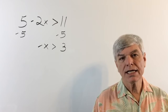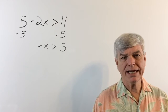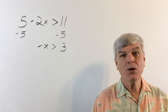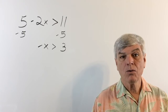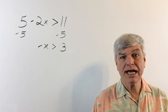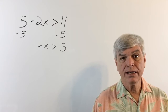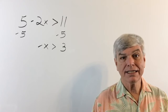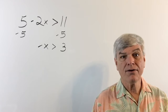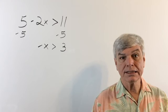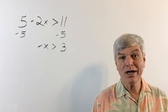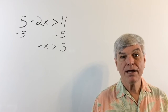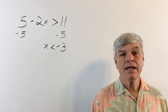We're going to multiply both sides by negative 1. When I multiply by negative 1, we get x and negative 3. But the inequality sign is going to flip — it's going to go in the other direction. That's the only thing different from solving a regular equation: when you multiply or divide by negative 1, you flip the inequality sign. So x is less than negative 3.